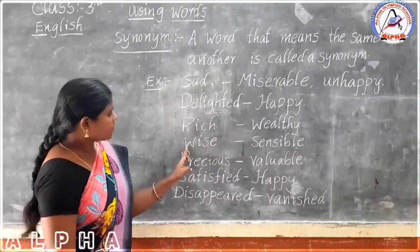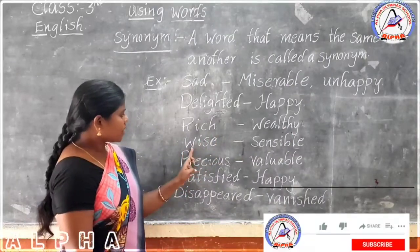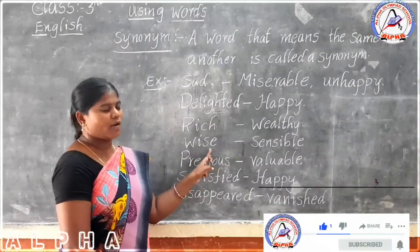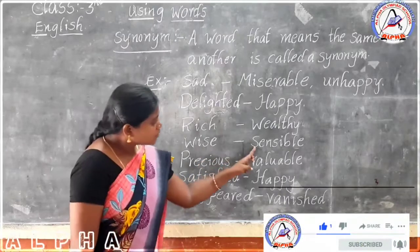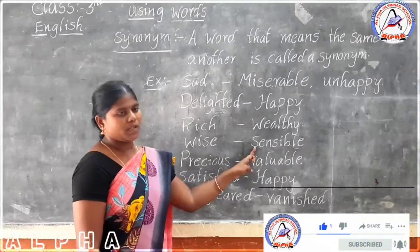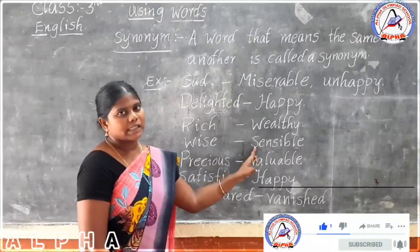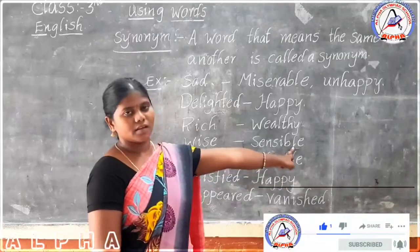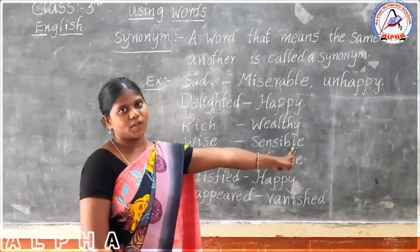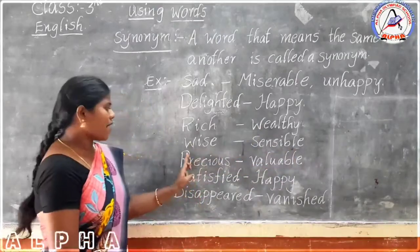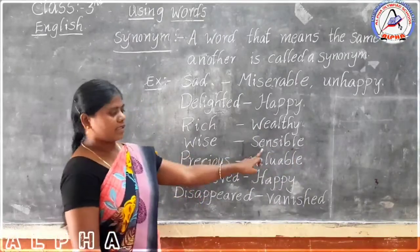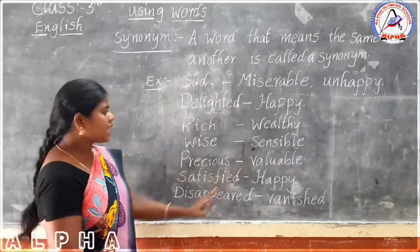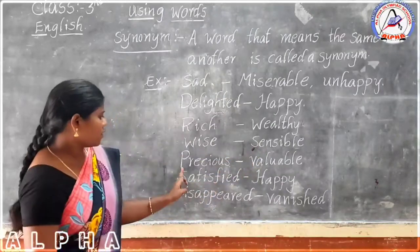Next. Wise — W-I-S-E. Sensible — S-E-N-S-I-B-L-E. Wise means sensible. These two words have the same meaning.